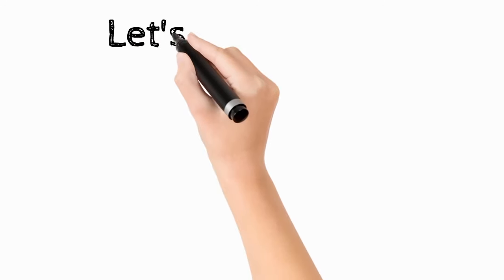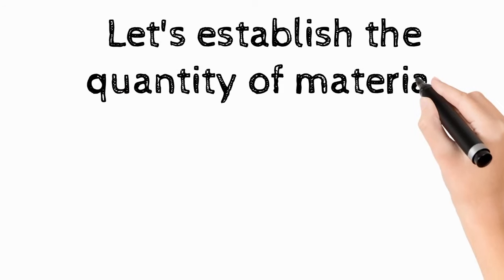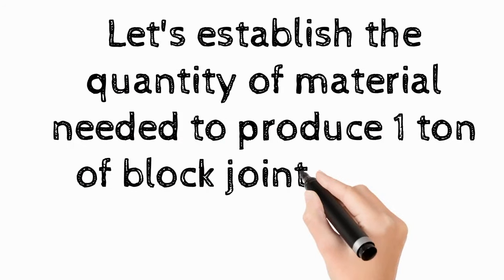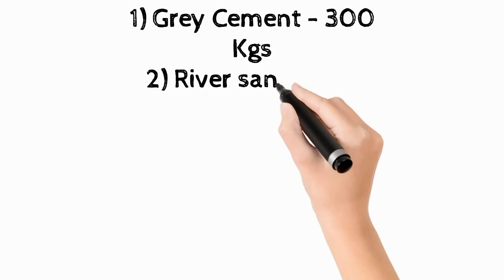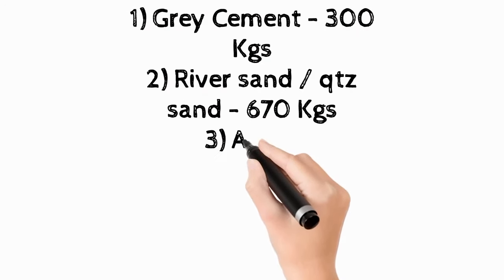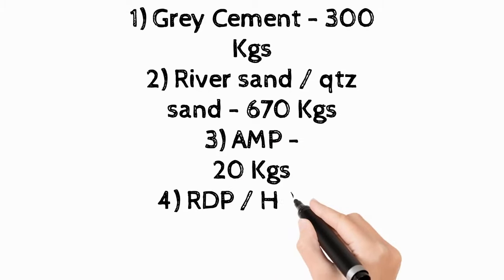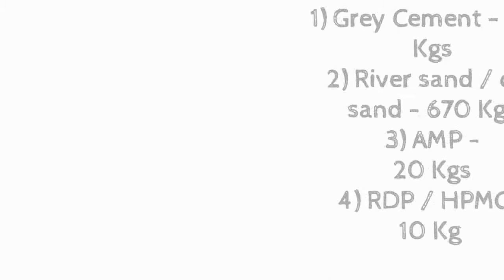Let's establish the quantity of material needed to produce one ton of block joint mortar. Gray cement 300 kg, river sand 670 kg, AMP 20 kg, RDP or HPMC 10 kg.